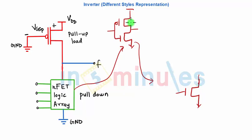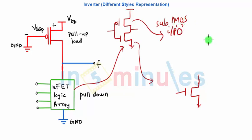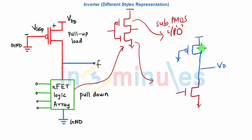My pullup will be substituted by a PMOS which has its input equal to zero, or grounded. So this is my PMOS with its input grounded. The output is taken in between the pullup and the pulldown network. Let's call this transistor P1, this transistor N1, and this input A. So the pullup is a PMOS transistor with its input grounded, and the pulldown is the same as static CMOS.